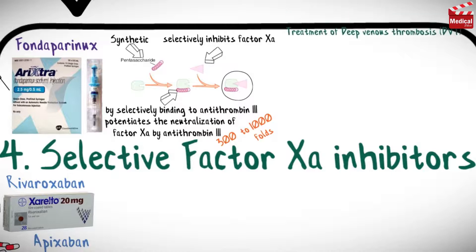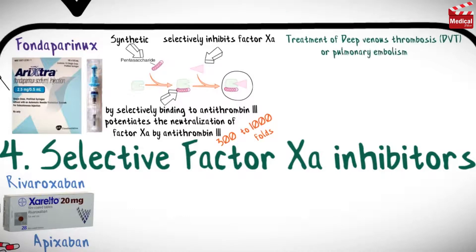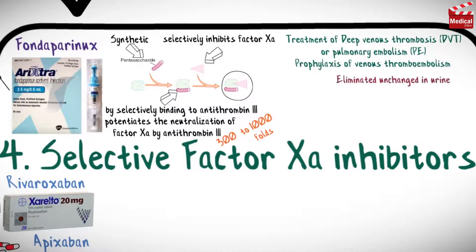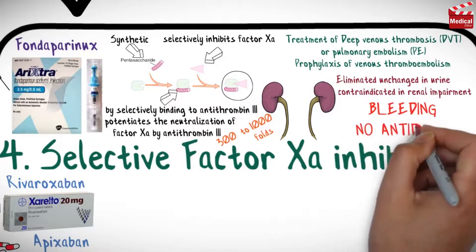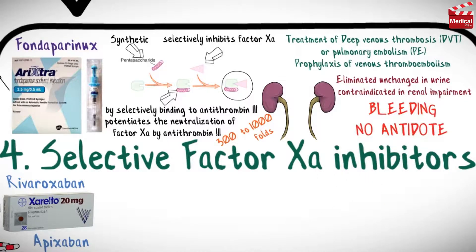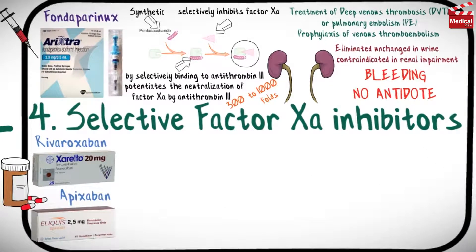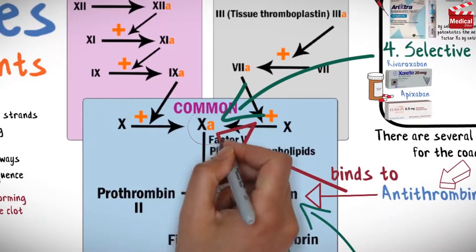Fondaparinux is approved for use in the treatment of deep venous thrombosis or pulmonary embolism, and for the prophylaxis of venous thromboembolism. It is eliminated unchanged in urine, so it is contraindicated in patients with severe renal impairment. Like the other anticoagulant drugs, bleeding is the major side effect and there is no antidote available to counteract bleeding disorders associated with overdosing.